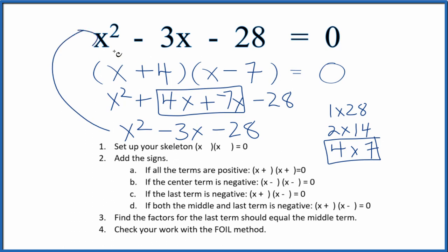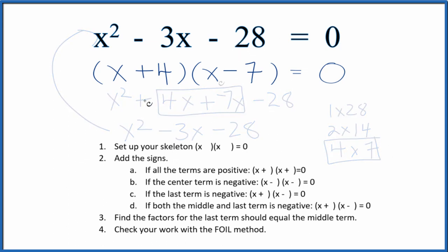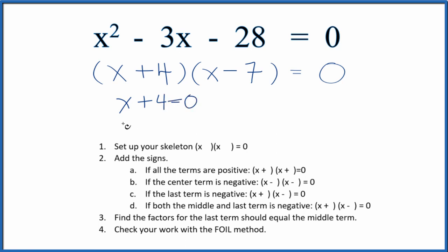So we factored this equation, x squared minus 3x minus 28, correctly. Let's find the values now for x that would make this all equal to 0. Make it a true statement. 0 equals 0. So we could say x plus 4 equals 0. Then x would equal negative 4.